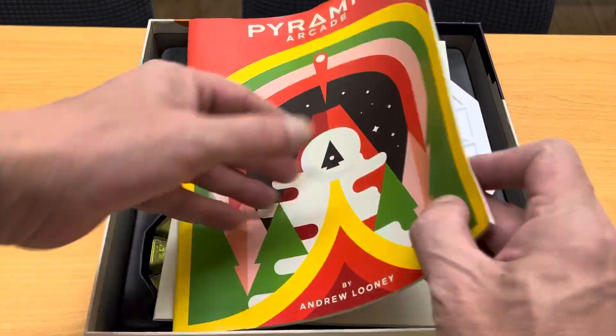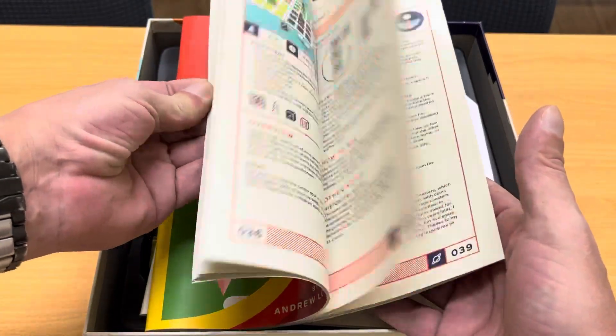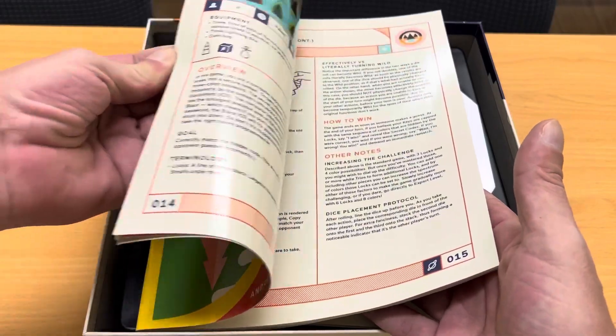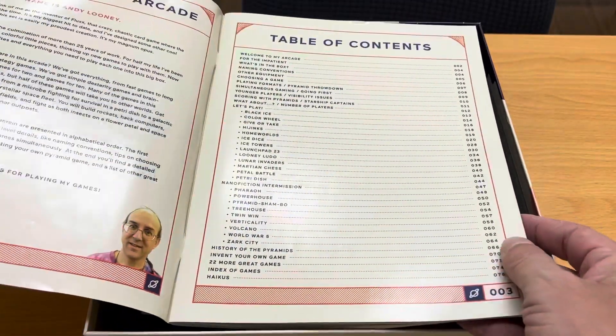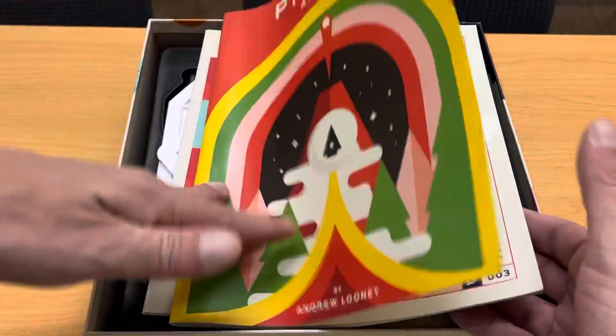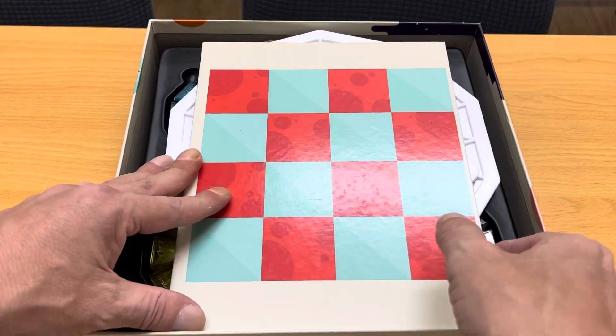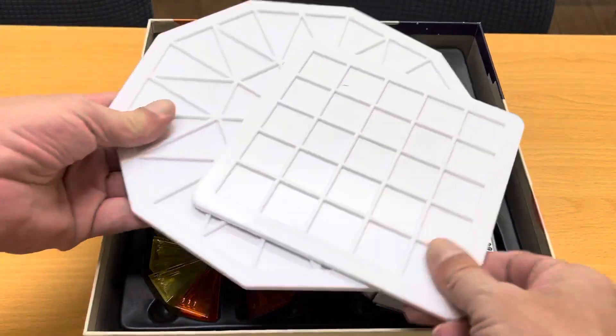So when you open up the box we have a big thick instruction manual, over 70 pages about each different game. There are quite a few games here as you can see. Then we have some boards that you can use to play the various different games.